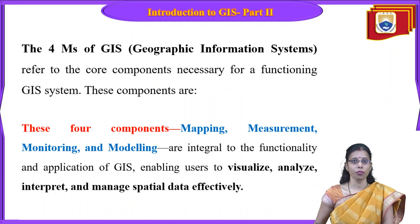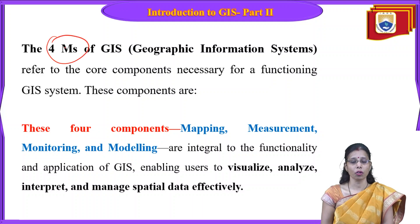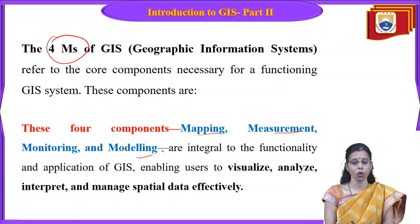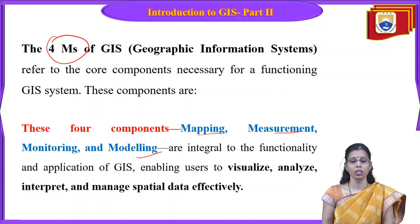Let us start with the definition of 4Ms. Why is it called 4Ms? Because we have four components — mapping, measurement, monitoring, and modeling — and all four start with M. That is why we call it 4Ms. These are the very important functions and components which GIS uses every time. Without these components, GIS is not at all possible.